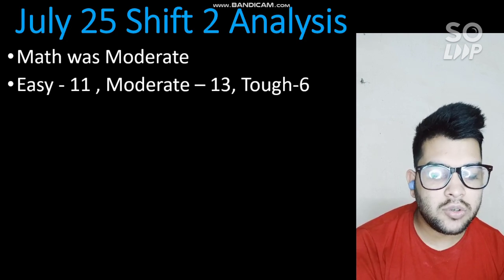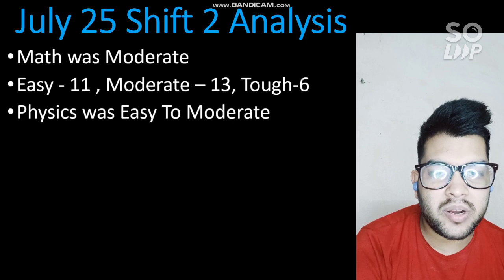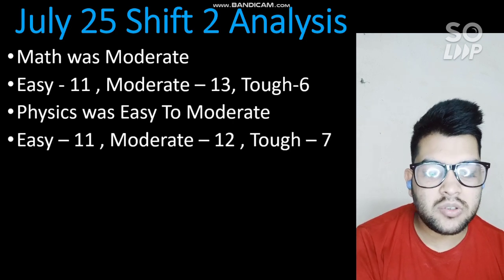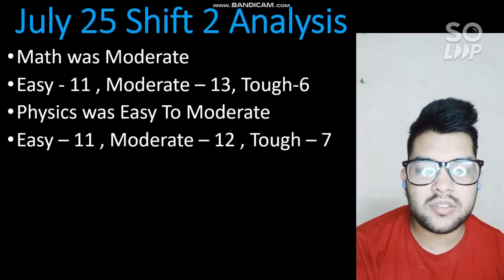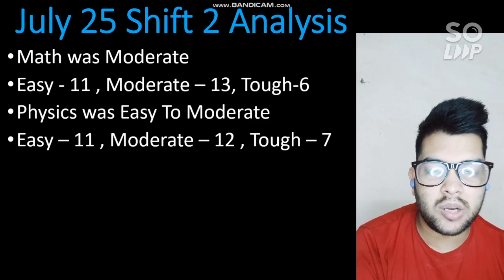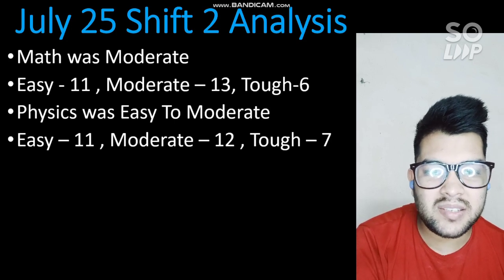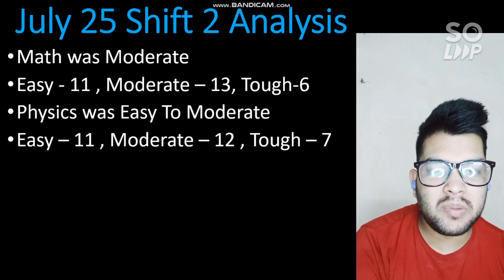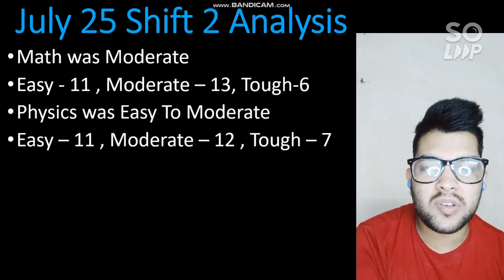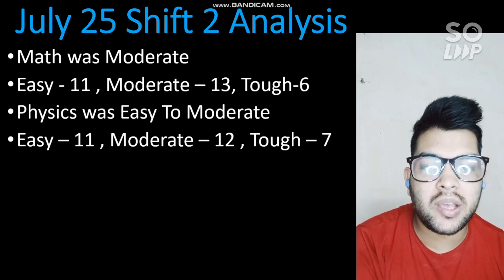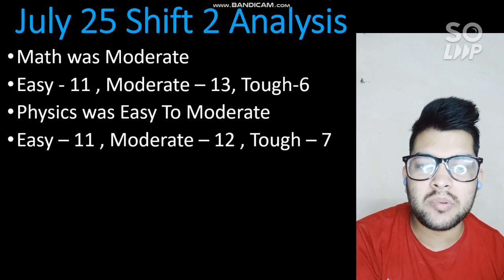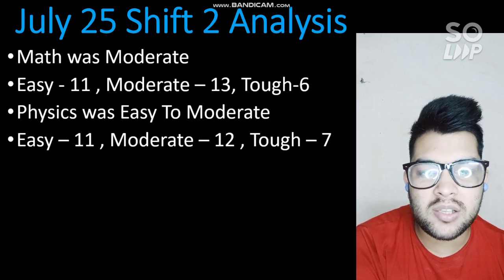Physics was easy to moderate — there were 11 easy questions, 12 moderate, and 7 tough. Questions appeared from thermodynamics and current electricity. Modern physics is an important part of the Physics syllabus, with five to six questions appearing in every shift. These are generally easy questions, so covering modern physics can help you score good marks.